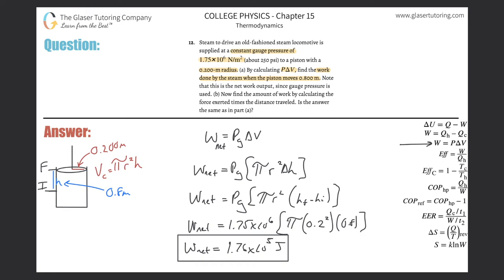And that's letter A. Letter B says now find the amount of work done by calculating the force exerted times the distance traveled. Is it the same as in part A? So now if we consider, remember work can also be defined as force times distance. So we know the distance, that's just the 0.8. But how do we find the force? What do you think?